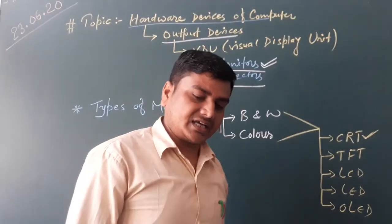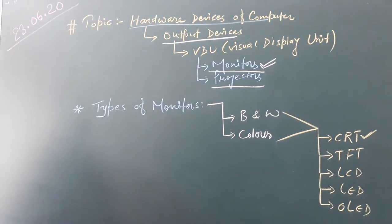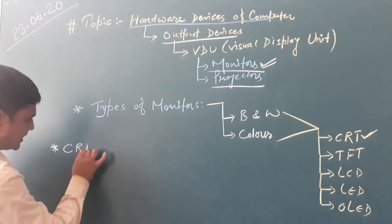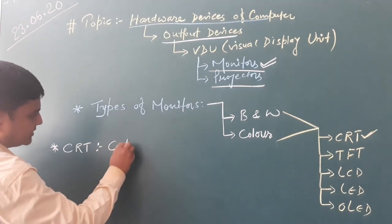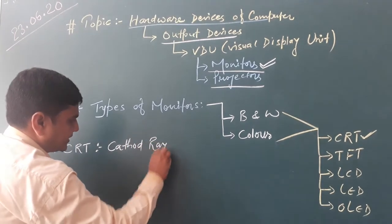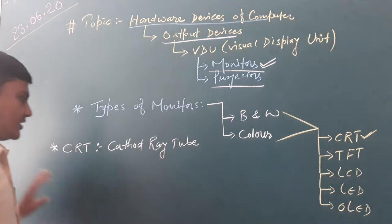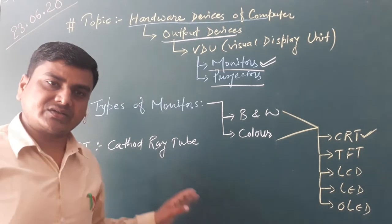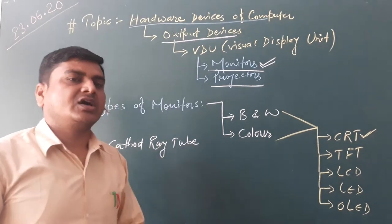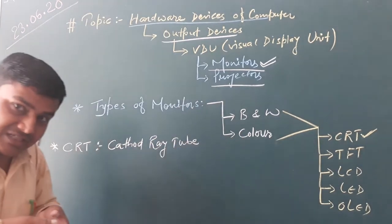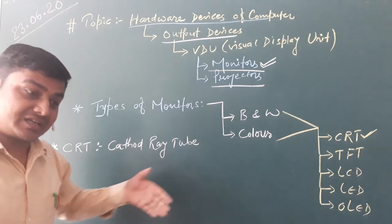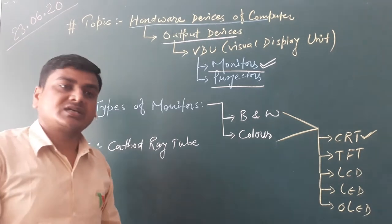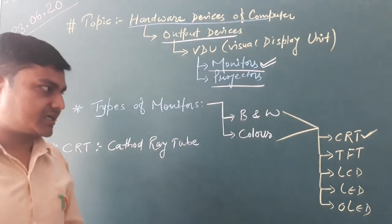First of all, we have CRT. CRT stands for Cathode Ray Tube. This is a very old type of monitor. It normally appears in black and white color, and it looks like that old style of TV. Inside that, Cathode Ray Tube technology is used to display the visuals and results.